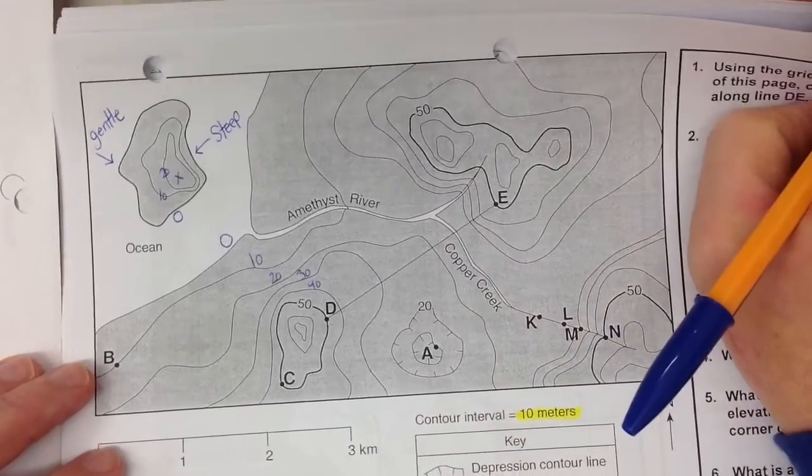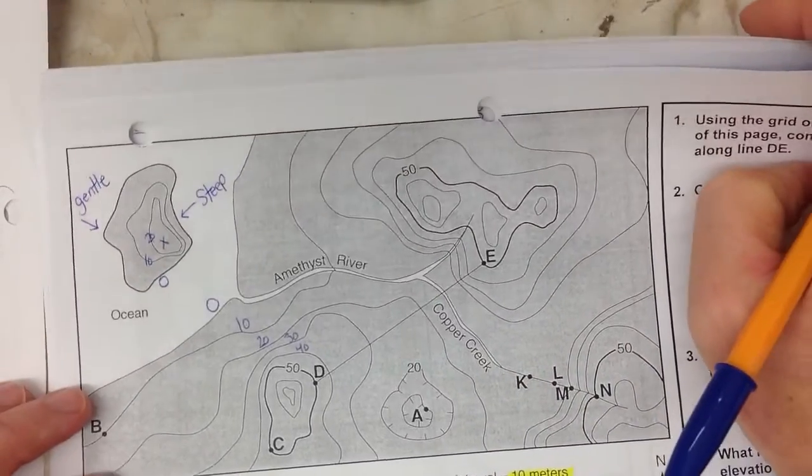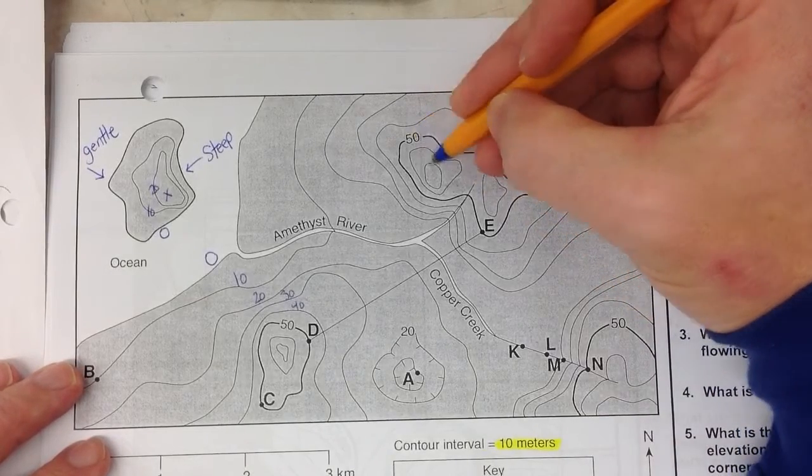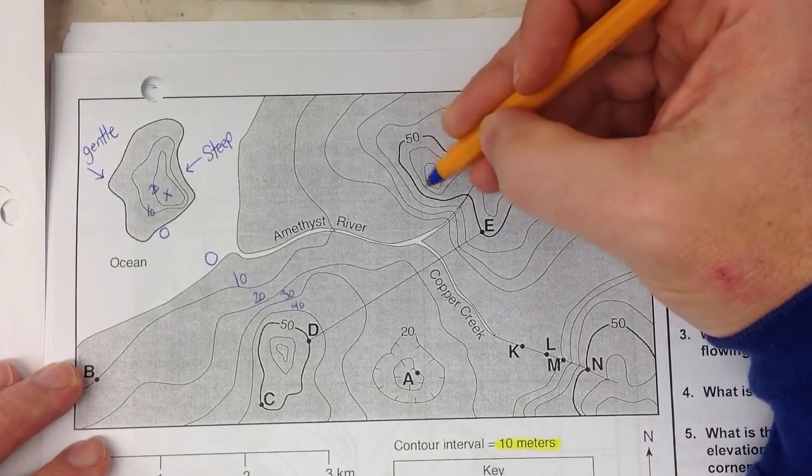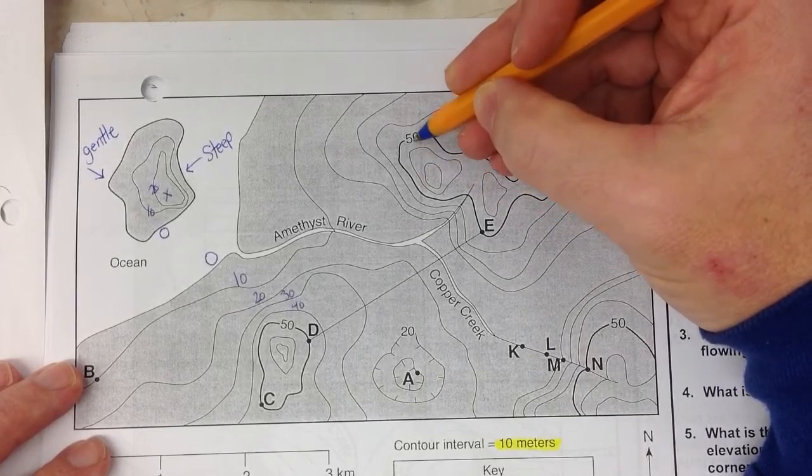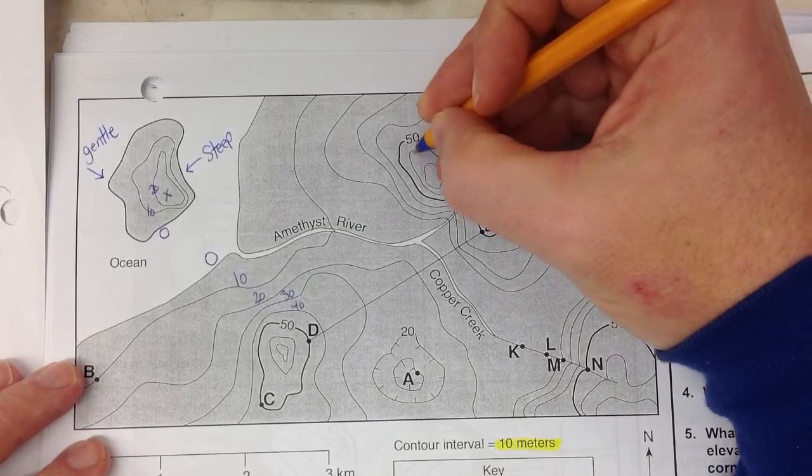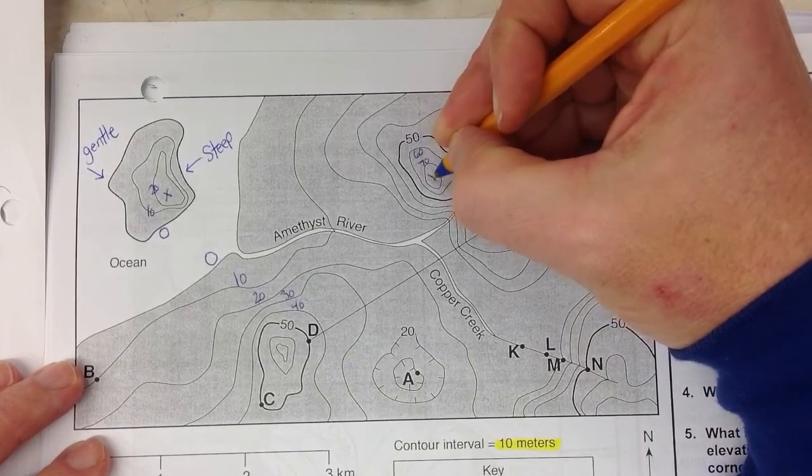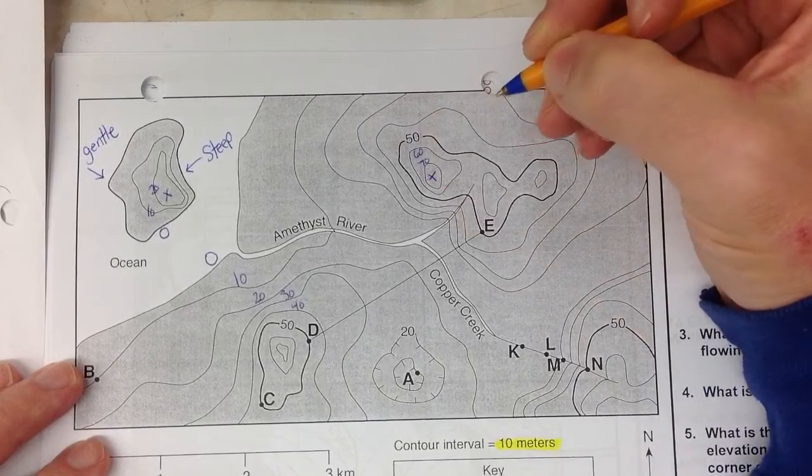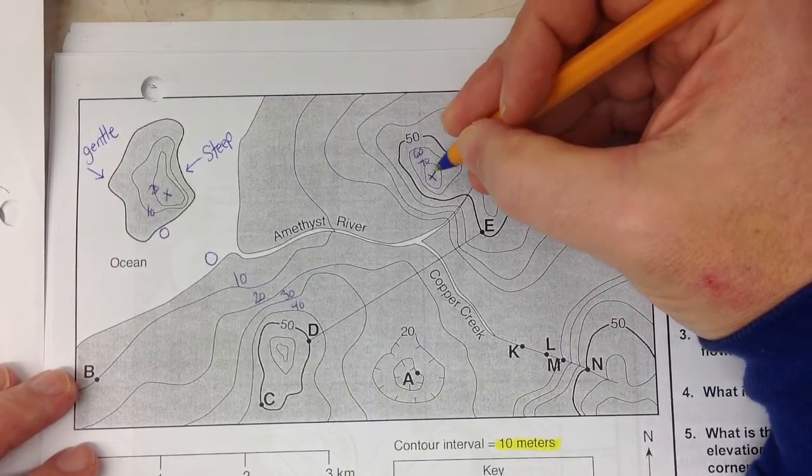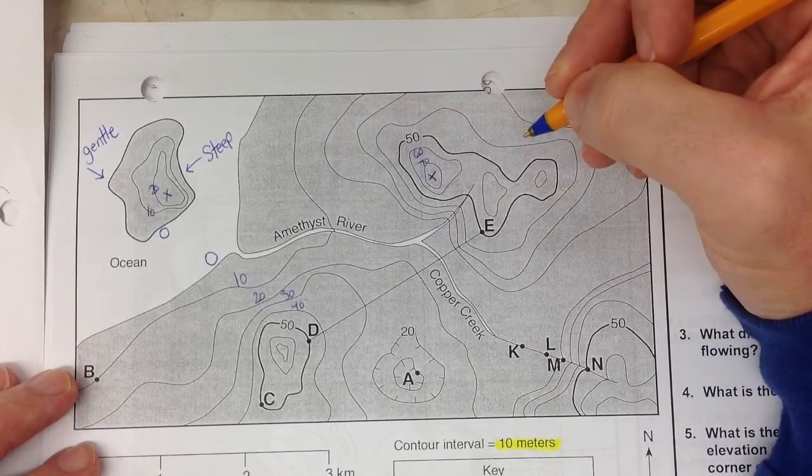Let me do one more example of the highest possible point. If I have a 50 line right here, whenever you have your contour lines making circles around each other, that's going to indicate you have a hill going upwards. So if that's 50, this is 60, this is 70, the highest possible point of that hill, well, the next line would be 80, but we don't have an 80 line. The highest I can count before I hit 80 is 79 meters.